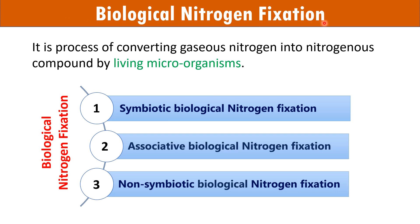Biological nitrogen fixation: in biological nitrogen fixation, atmospheric nitrogen is converted into nitrogenous compounds by living organisms. There are three types of biological nitrogen fixation: symbiotic biological nitrogen fixation, associative biological nitrogen fixation, and non-symbiotic biological nitrogen fixation.